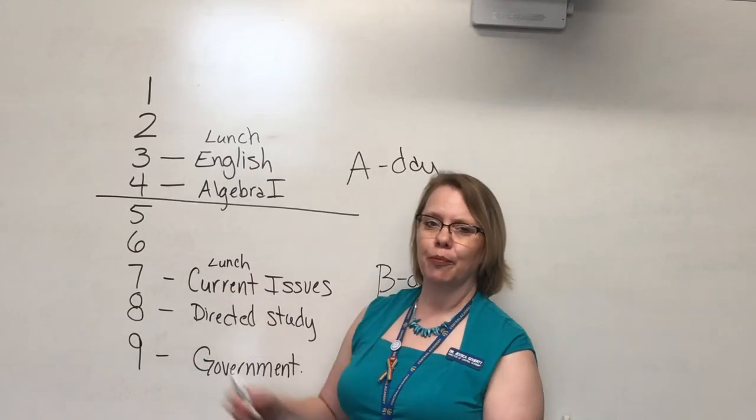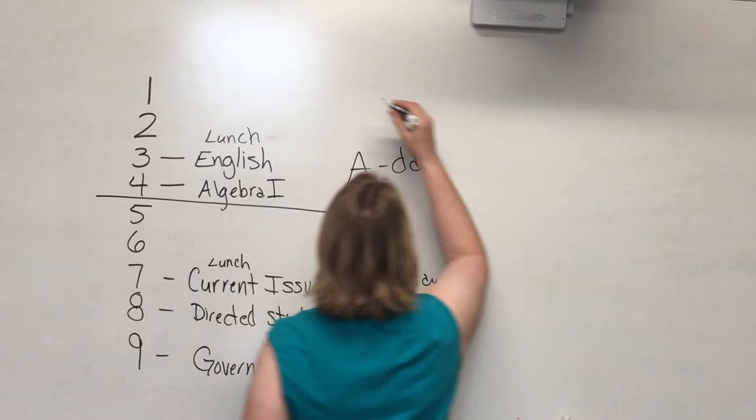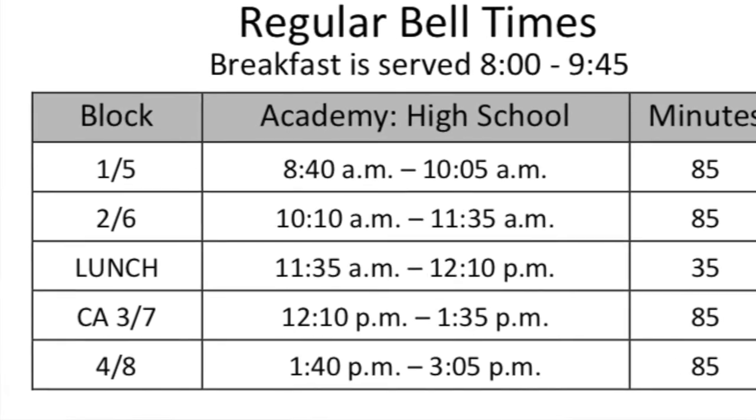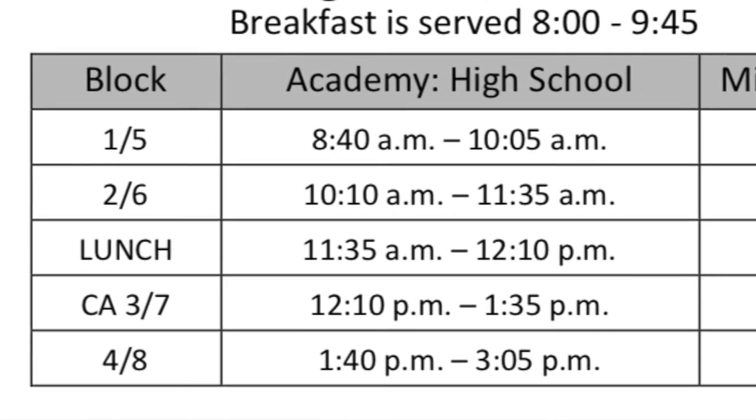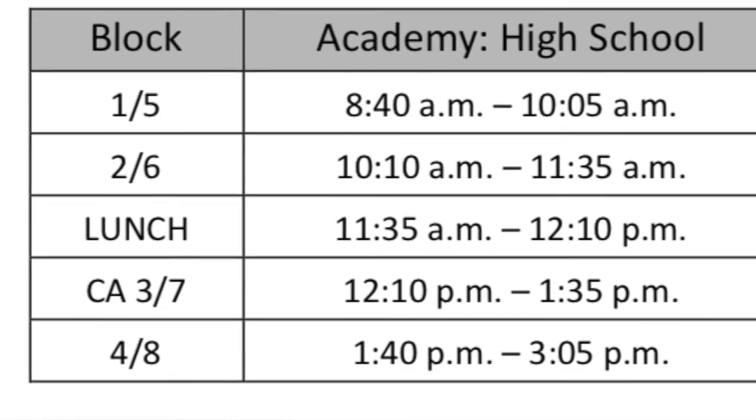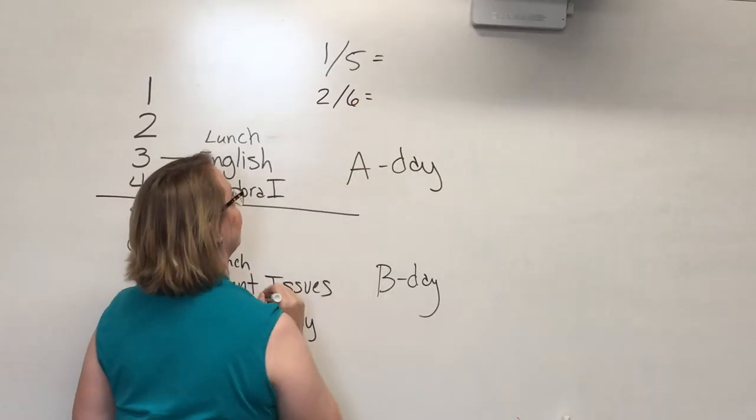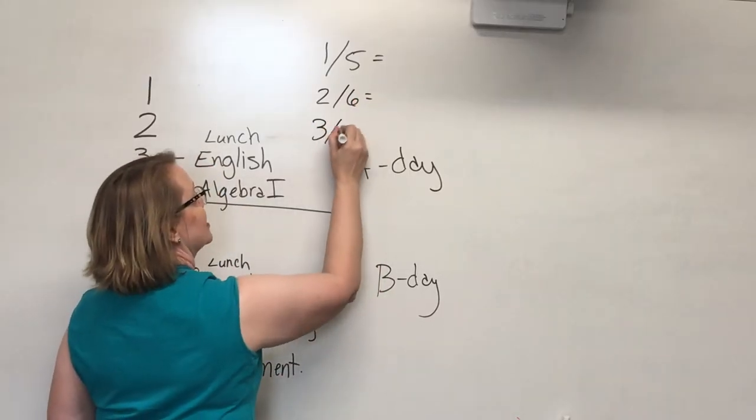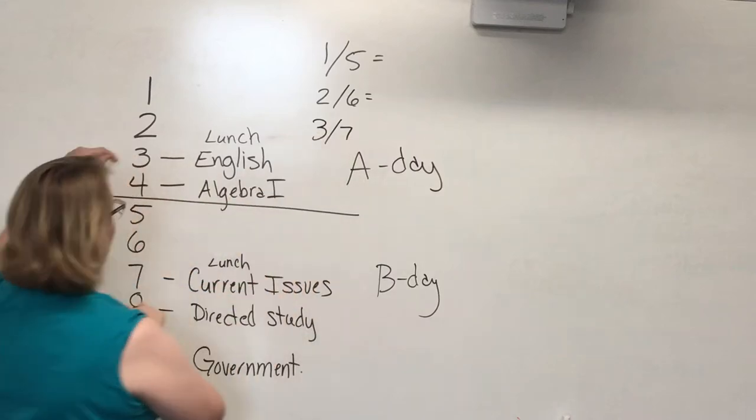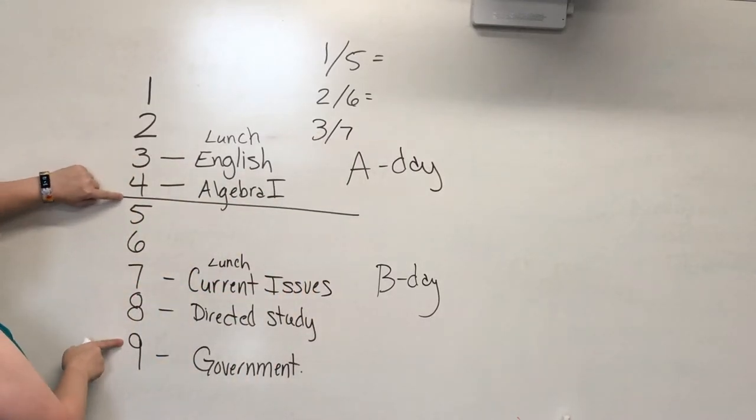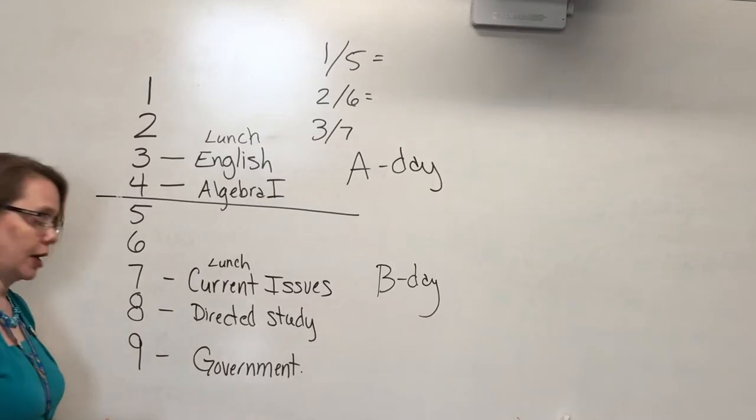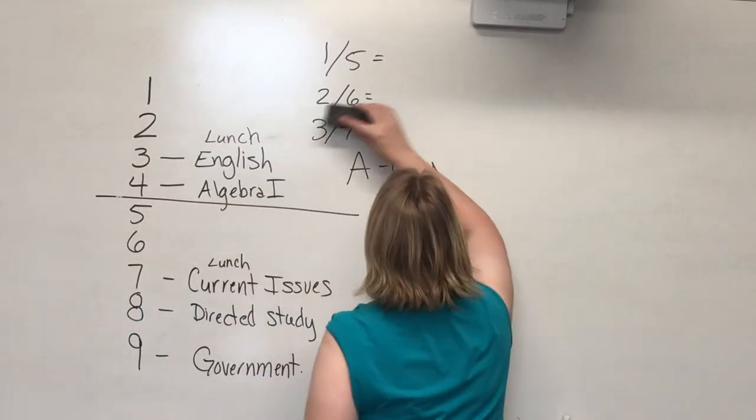So sometimes you'll see our bell times written like this where they say block one and five will be at a certain time, block two and six will be at a different time, three and seven. And the reason why those times are the same is because they are at the same time of the day.